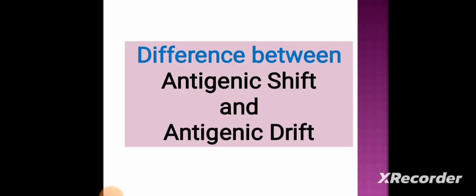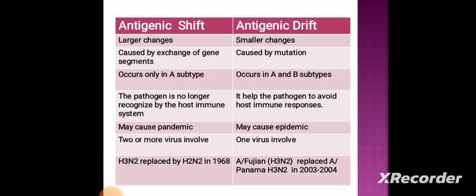Now let's discuss the differences between antigenic shift and antigenic drift. Antigenic shift involves larger changes, whereas antigenic drift involves smaller changes. Antigenic shift is caused by the exchange of gene segments, whereas antigenic drift is caused by mutation. Because of antigenic shift, the pathogen is no longer recognized by the host immune system.